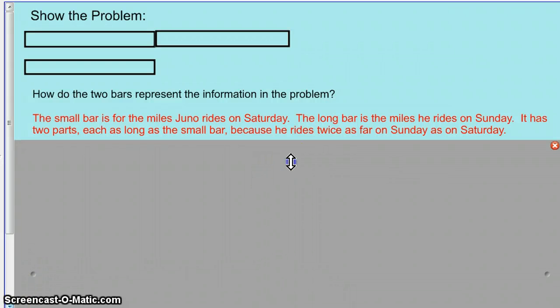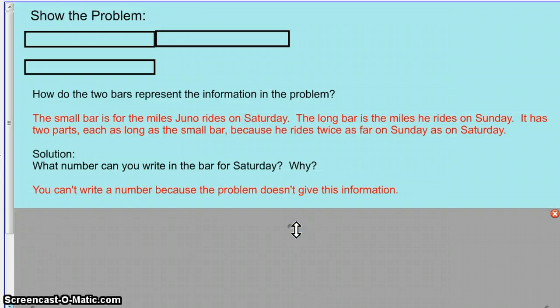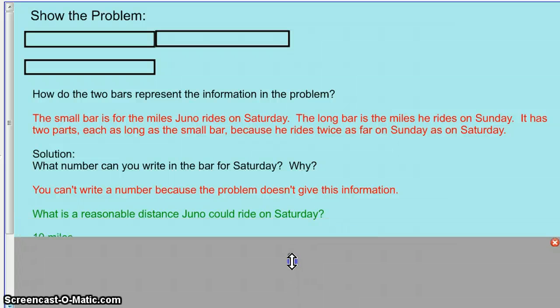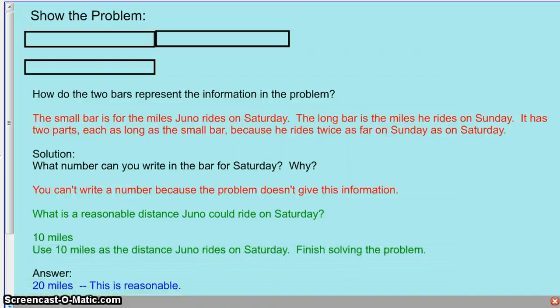For the solution they didn't give me the number so I will make something reasonable up. I'm going to go ahead and put 10 miles. Please write 10 miles for the solution and then since it's twice as much on Sunday it should be 20 miles. Is that reasonable? Yes. So my solution was 10, my answer would be 20 and check reasonable.